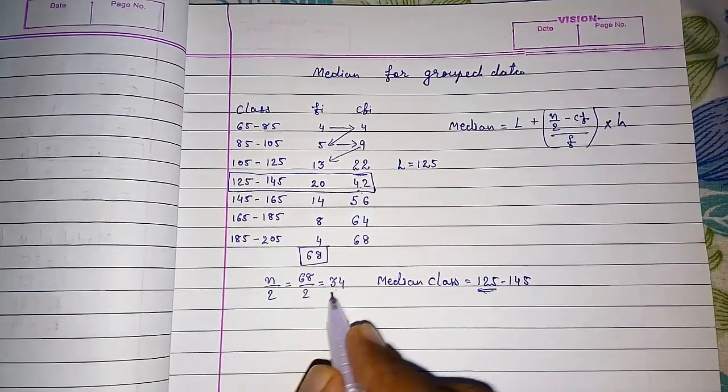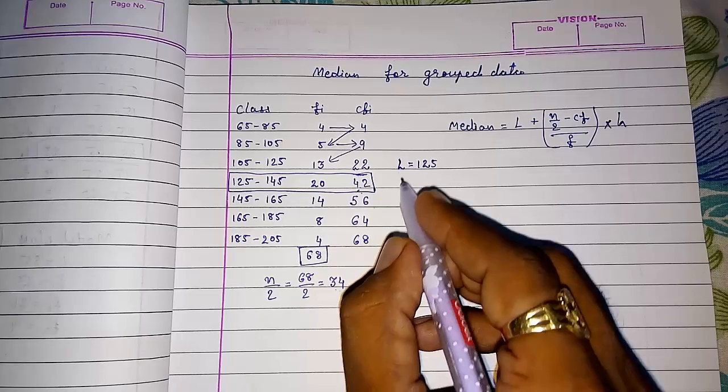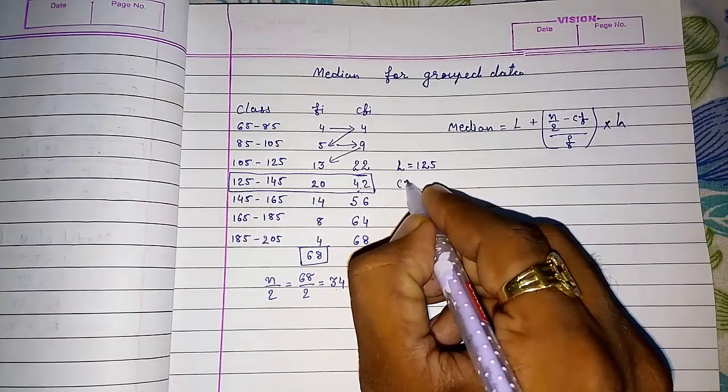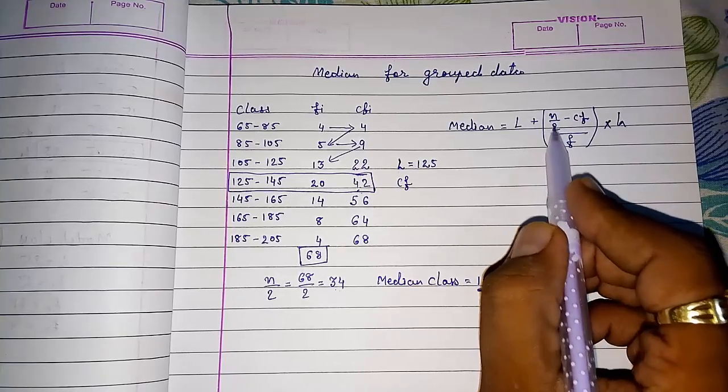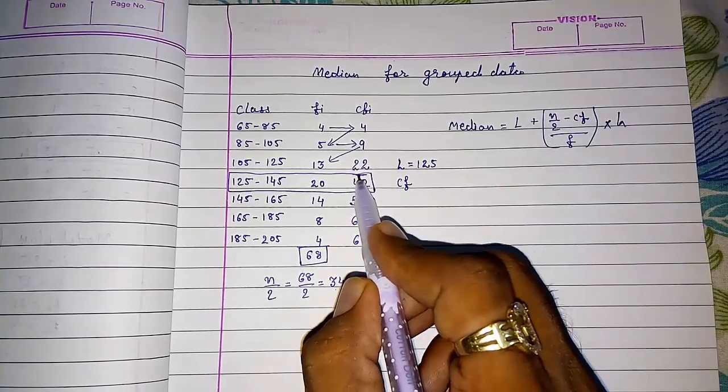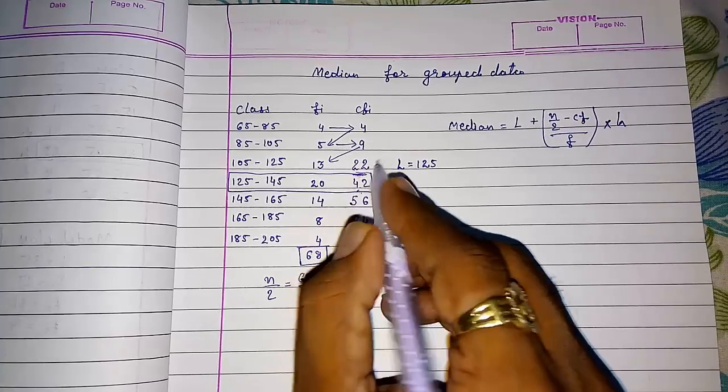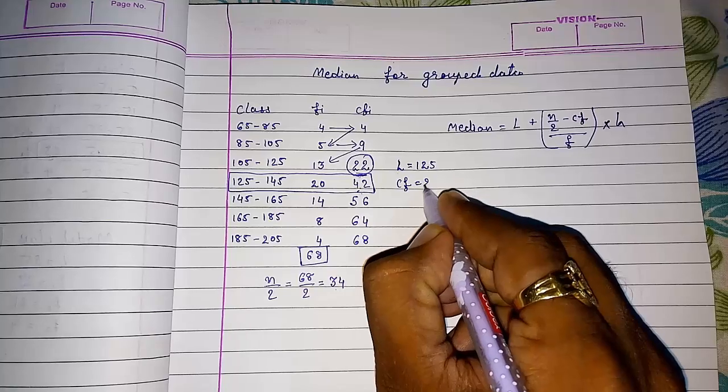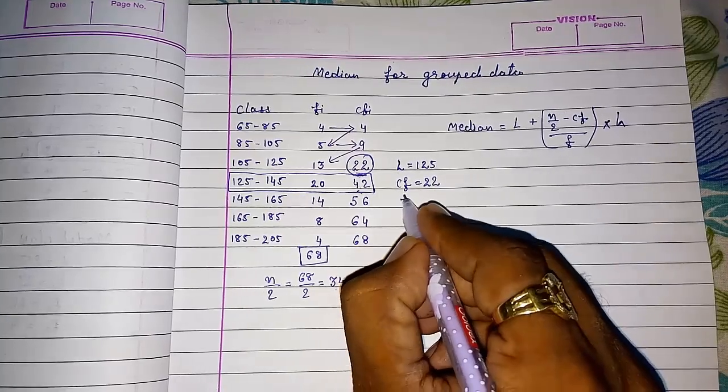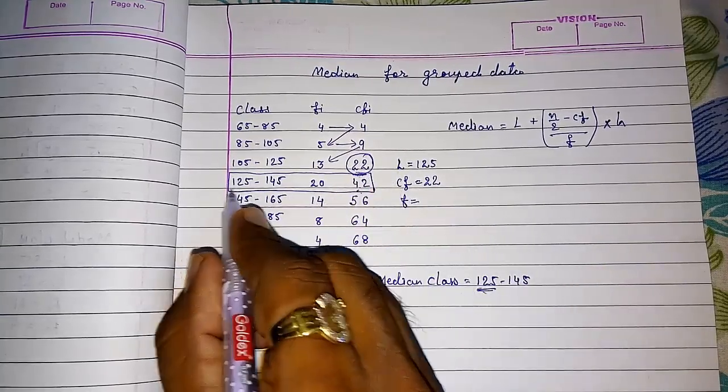n by 2 we already found is 34. Then CF, cumulative frequency, is always less than n by 2. n by 2 is 34, so we take the previous number from where we started. This is our cumulative frequency, which is 22.